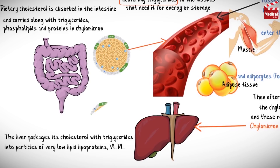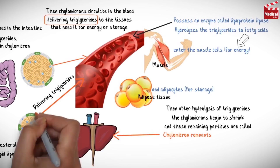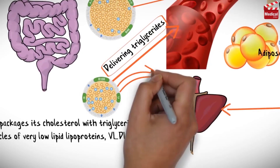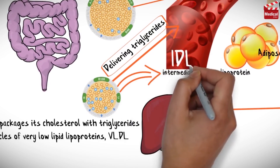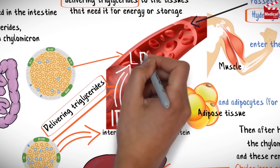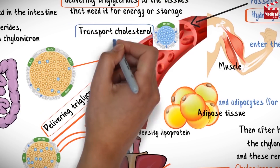VLDL travels in the bloodstream to other organs. During circulation, muscle and adipose tissues get fatty acids from VLDL again through hydrolysis of their triglycerides by lipoprotein lipase, turning VLDL into intermediate density lipoprotein, IDL, which is then converted through circulation to low density lipoprotein, LDL. LDL's main function is to transport cholesterol to body tissues.